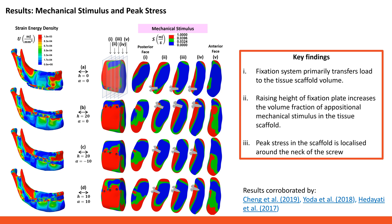Our second key finding is that raising the height of the fixation plate increases the volume fraction of appositional mechanical stimulus in the tissue scaffold. And thirdly, our peak stress findings show that all peak stress locations in all 19 models occurred in the region of the hole where the neck of the screw is in contact with the scaffold. The maximum peak stress value measured was 2.5 MPa, which is much weaker by a factor of 40 than the ultimate material strength of the bioceramic material.